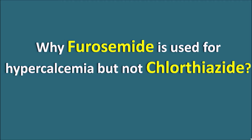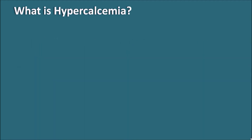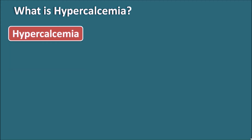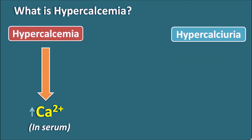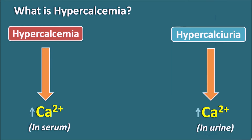Why is furosemide used for hypercalcemia but not chlorothiazide? First, let us define these terms. Hypercalcemia is a condition of elevated levels of calcium within the serum. A related term is hypercalciuria, which refers to elevated levels of calcium within the urine. We should not confuse between these two terms.